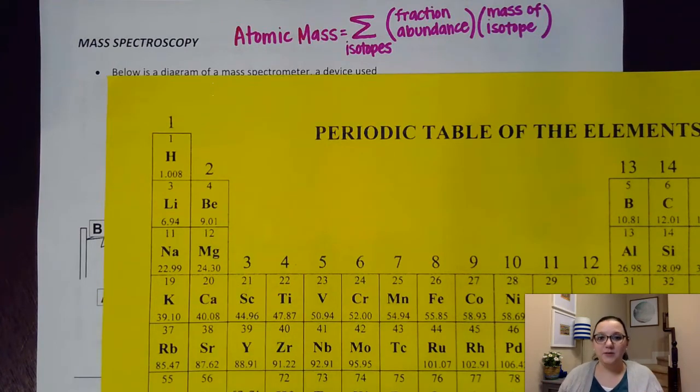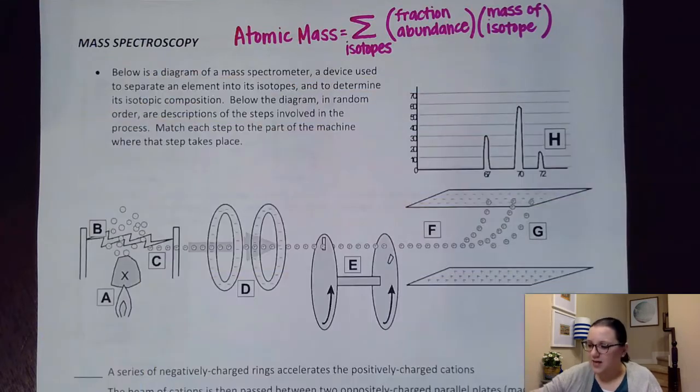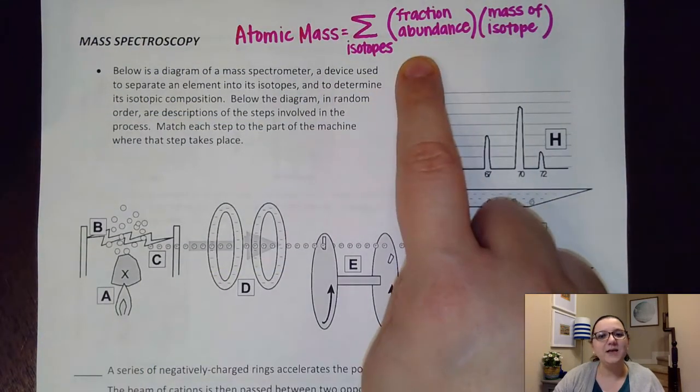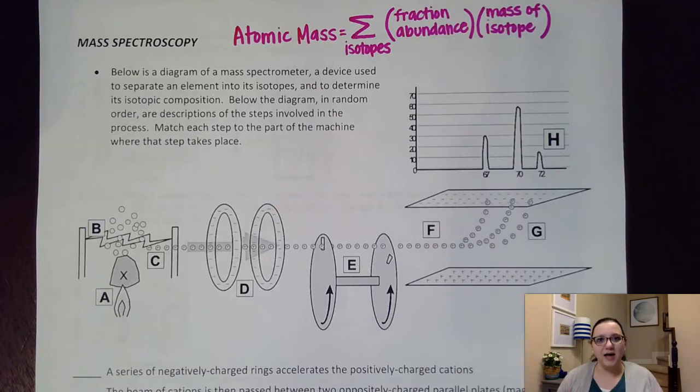So here's the big question then. How do we get this fraction abundance and mass isotope information? Where does that come from? And that's where mass spectroscopy comes into play.